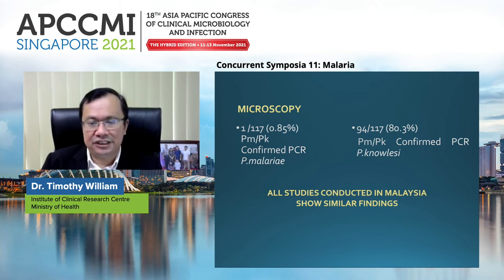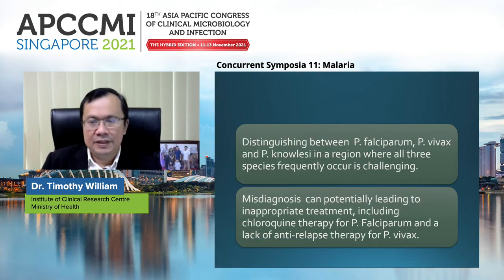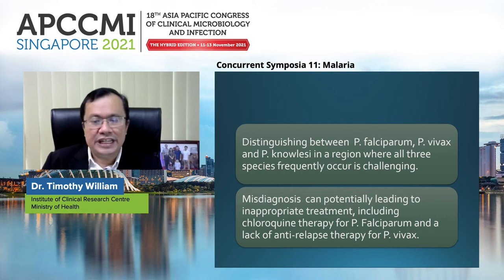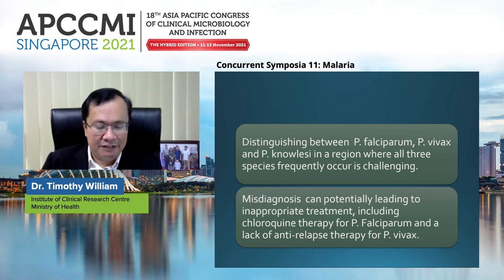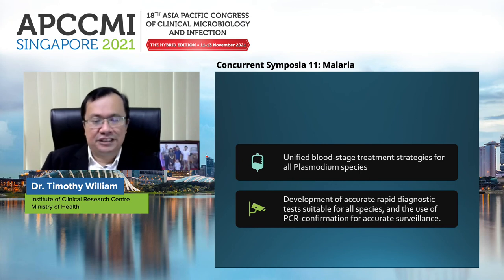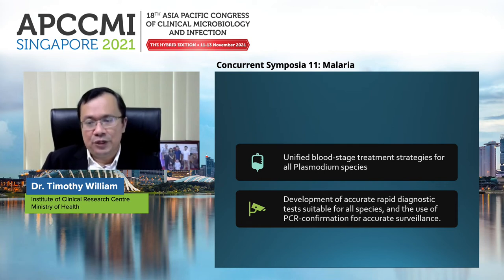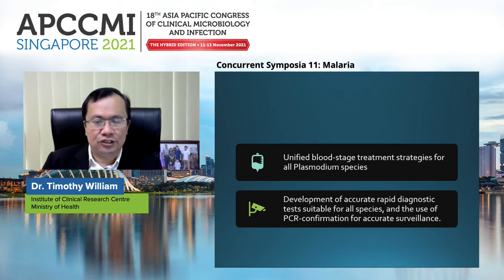Misdiagnosis can potentially lead to inappropriate treatment, including chloroquine therapy for P. falciparum and a lack of antirelapse therapy for P. vivax. A unified blood-stage treatment therapy for all co-endemic species is therefore essential. We also need to develop rapid diagnostic tests suitable for all species and use PCR confirmation for surveillance.